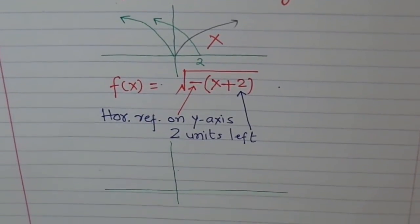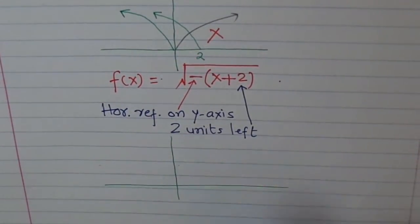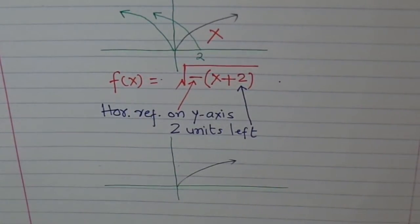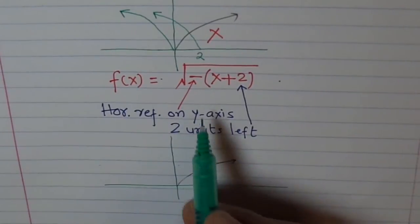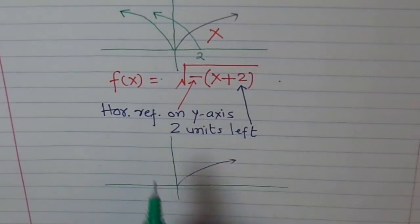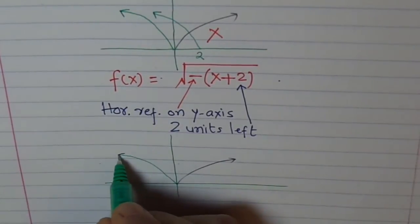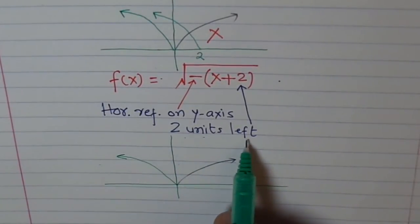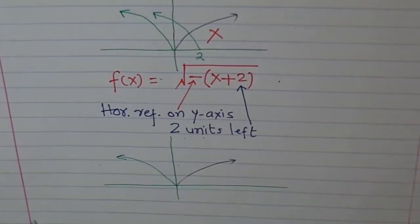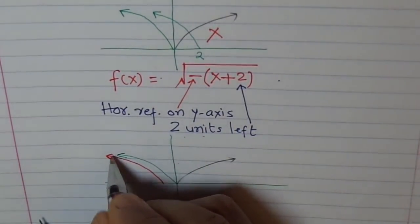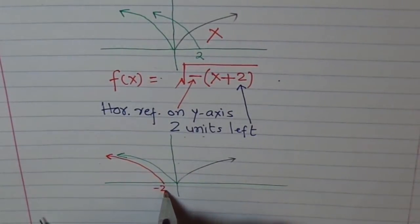So the correct version is like this. This is our original function, square root x. Now, what we do here? We translate it. We first reflect it. Horizontal reflection. And once you do that, you get this graph. And then do two units left. When you do two units left, you get your final graph. And which will look like this. This is at minus two.